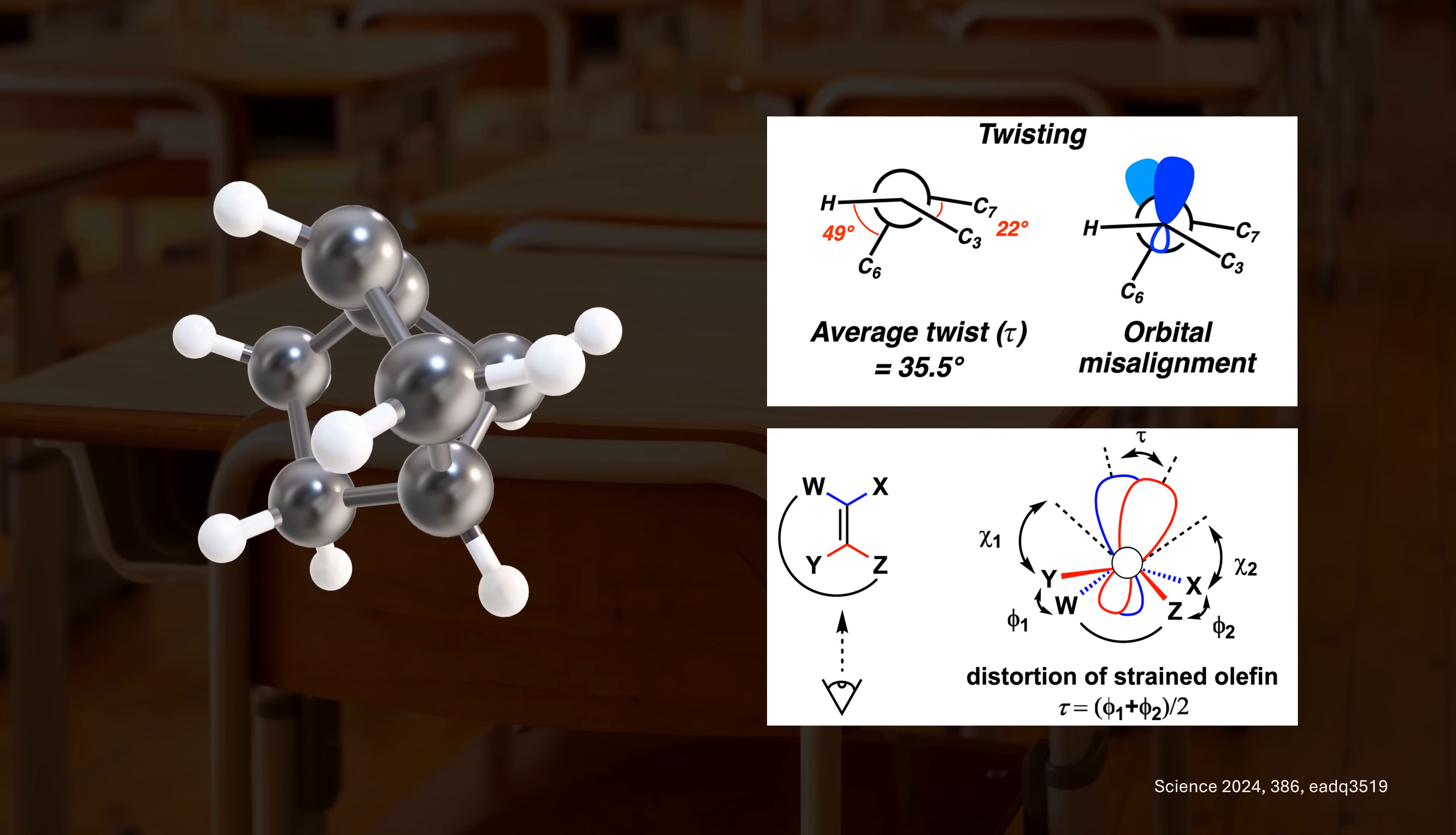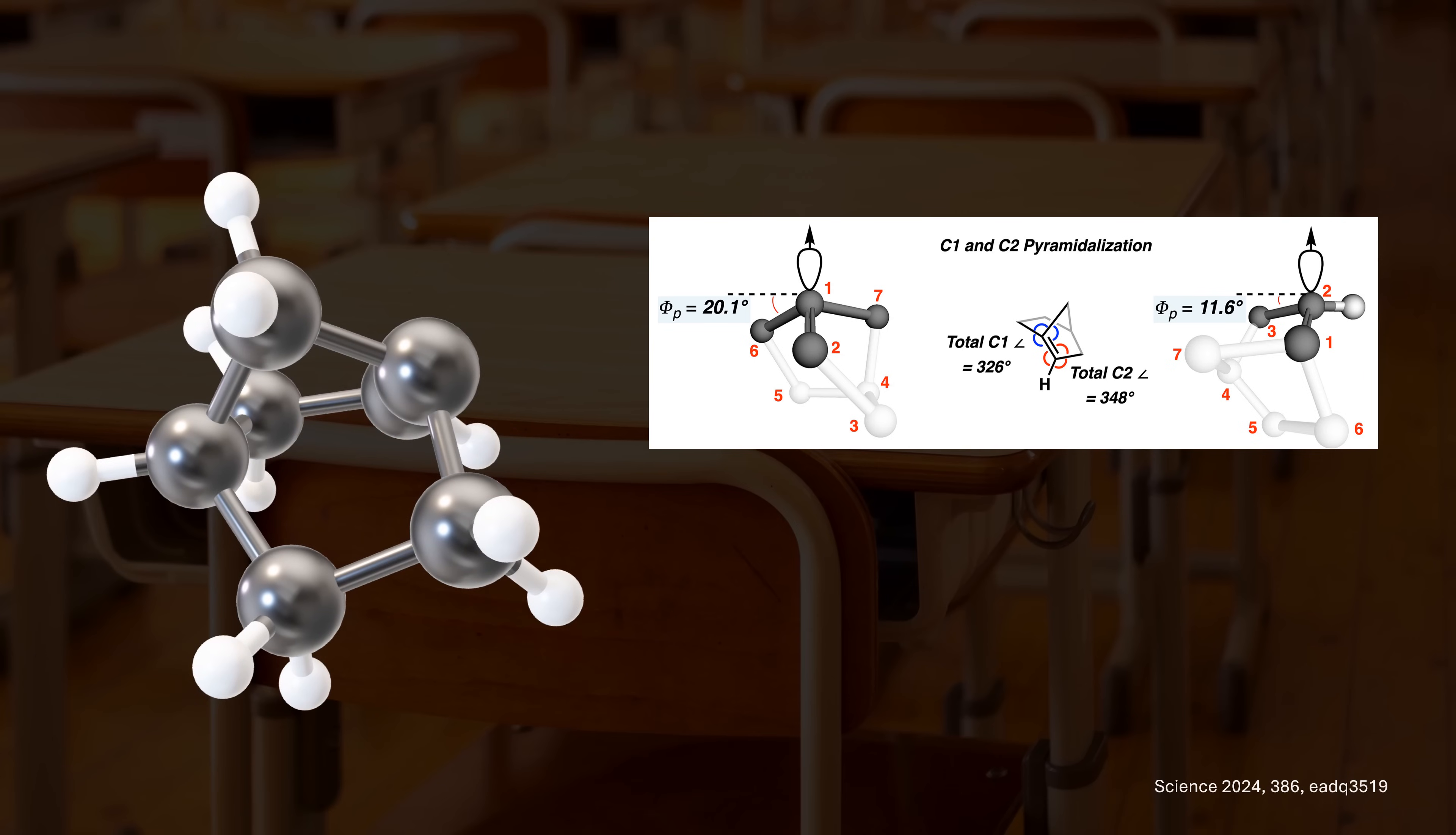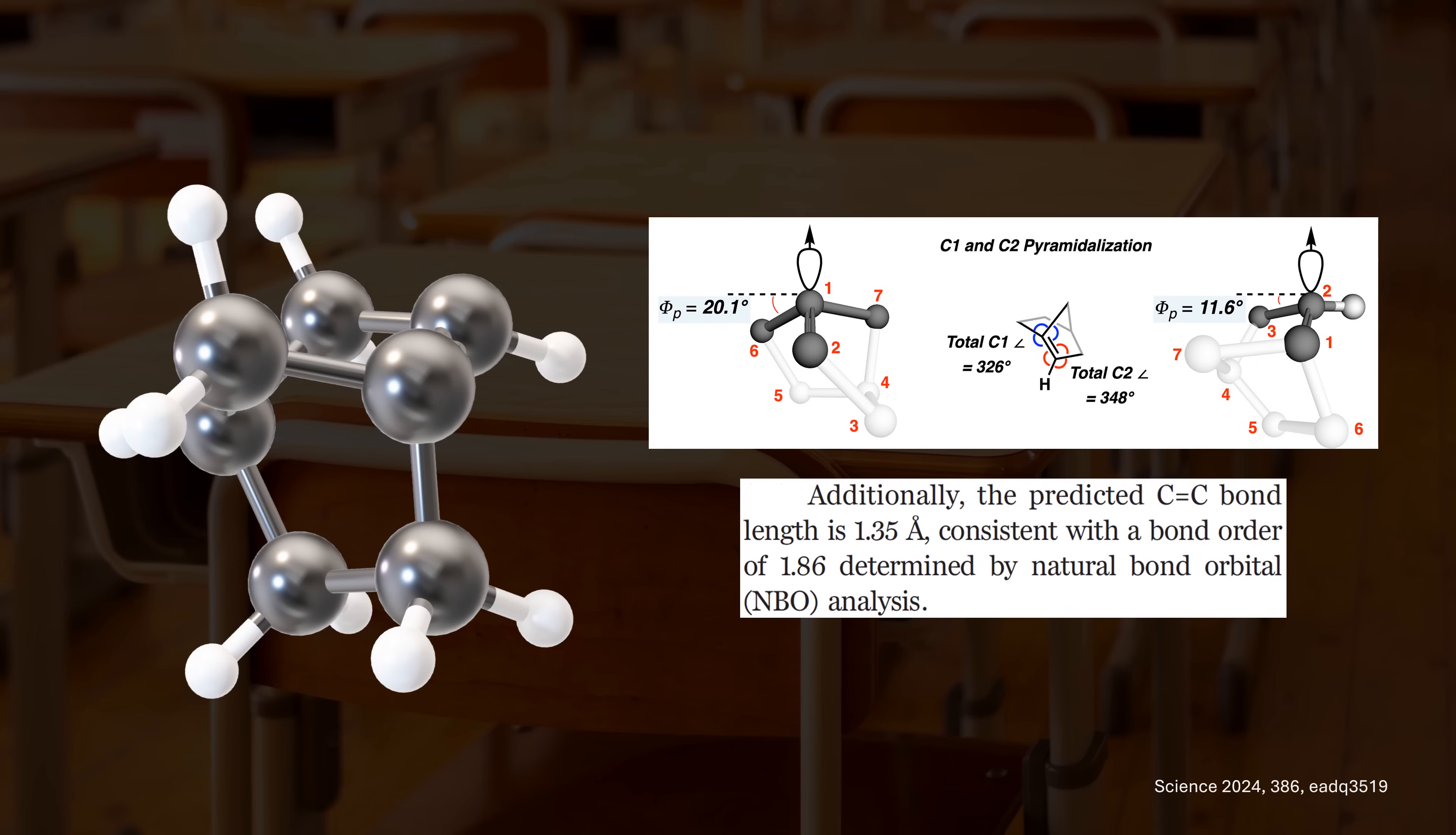Speaking of p-orbitals, remember how normal alkenes are sp2 hybridized? In the anti-Bredt olefin, we see a significant re-hybridization to sp3 character as the carbons are pyramidal. This reorientation is key to boost the bond order to a surprisingly high value of 1.86. We have good evidence to believe that these are actually legit double bonds and not something like a diradical. More on this later.